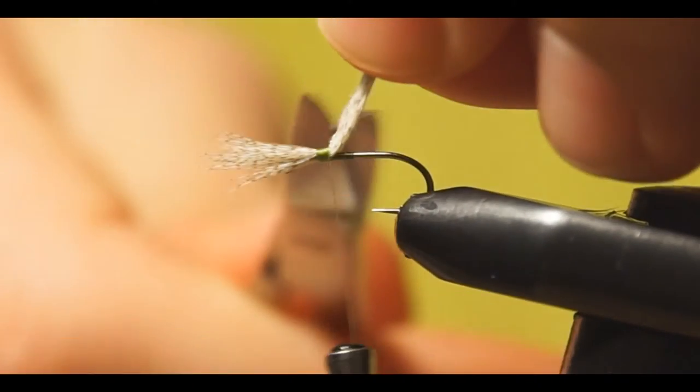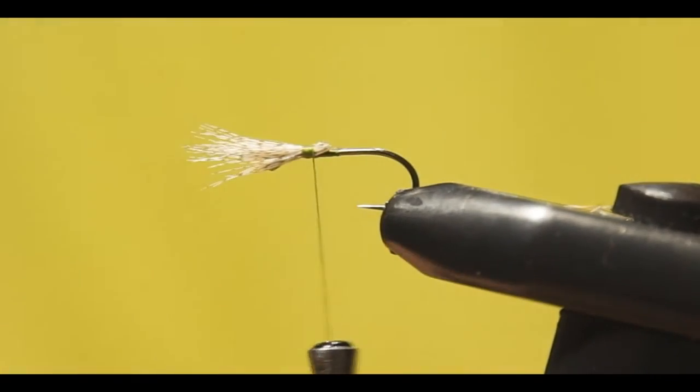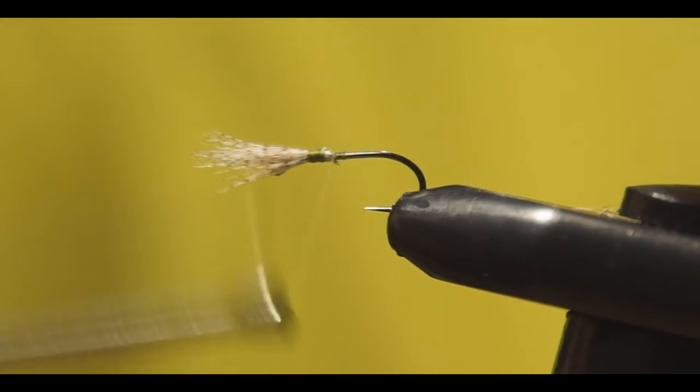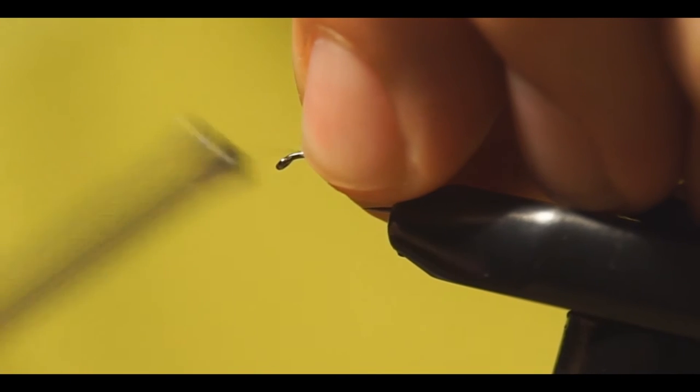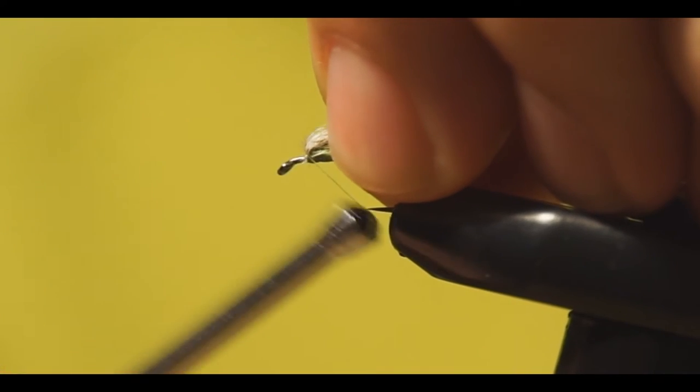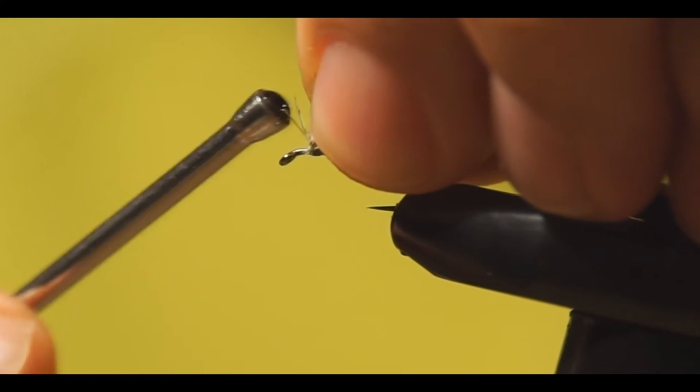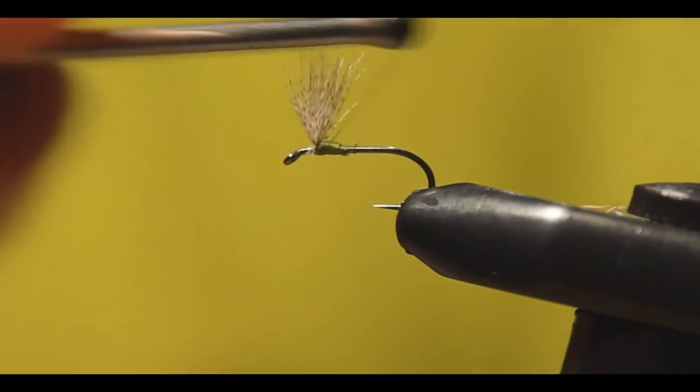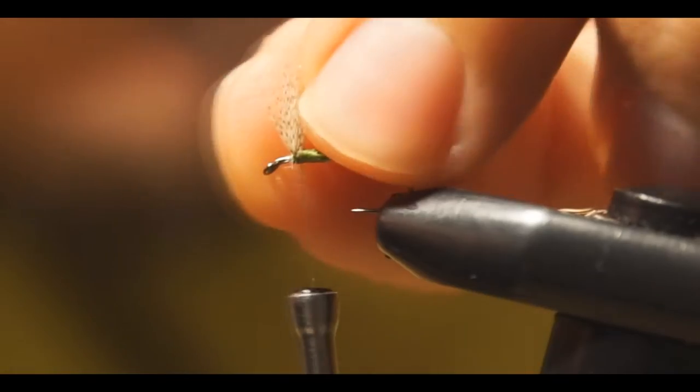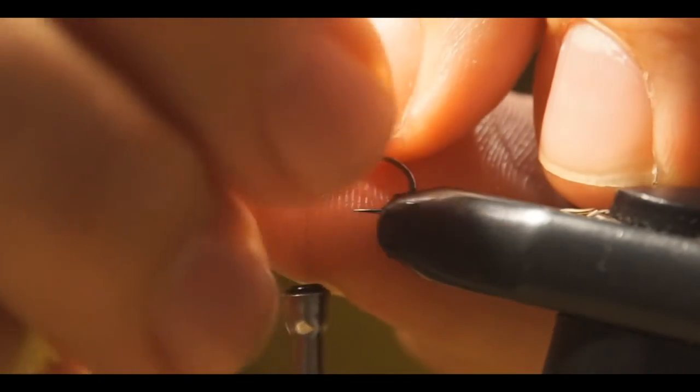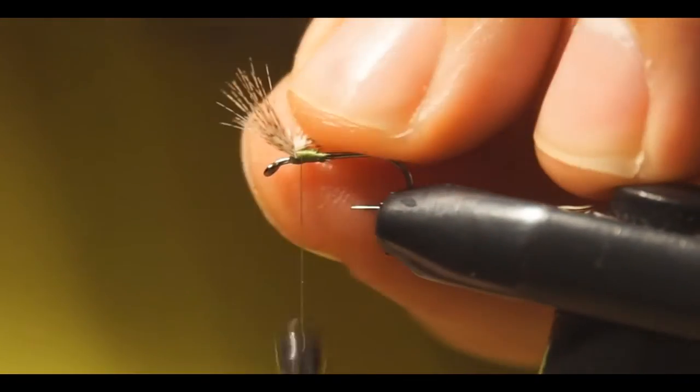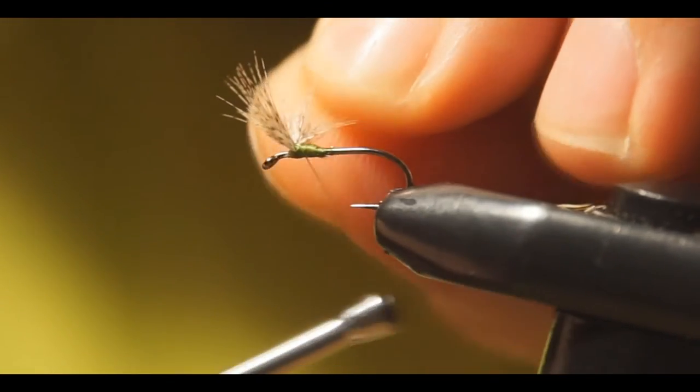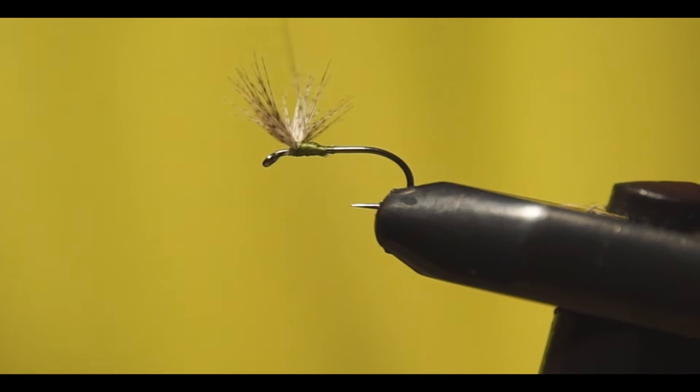And we cut the excess. Then we jump in front of the wings so that they stand upright like this. We need to split them in half. Now we put the thread in between once and the second time.